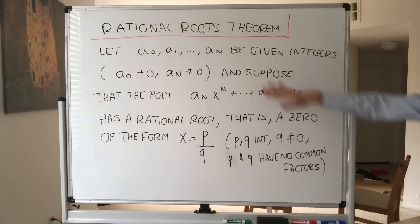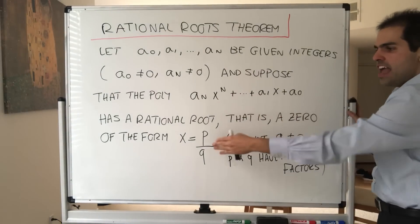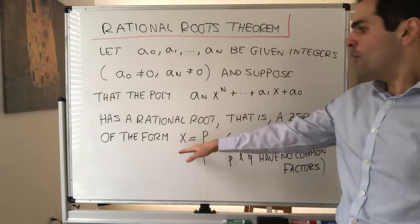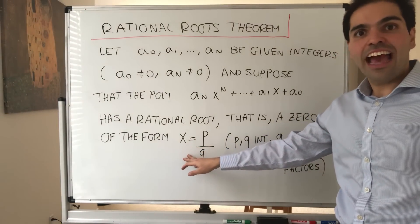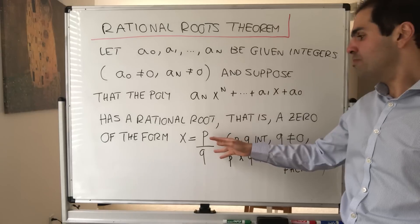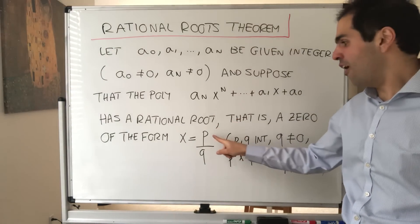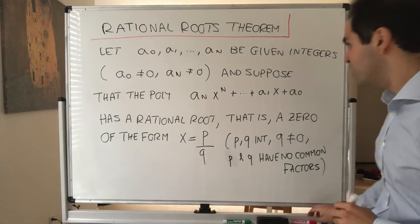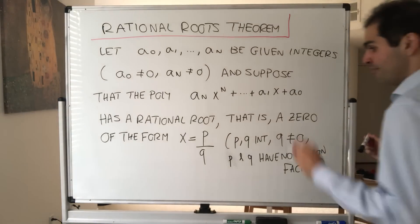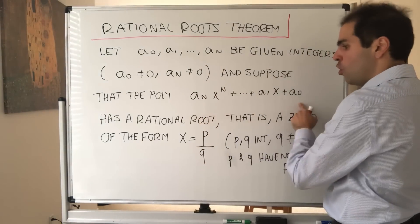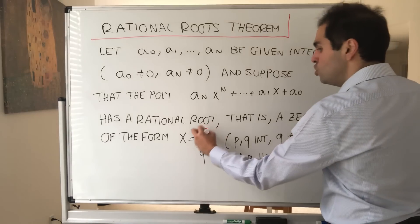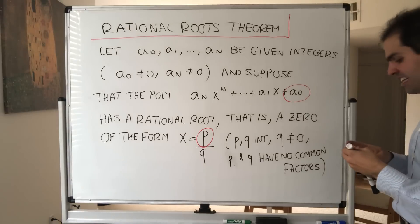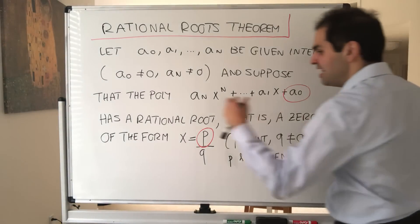So again, so far just the setup. Suppose you have a polynomial and you know it has a root that's a fraction. Now comes the interesting thing. What this theorem says is x cannot just be a random root. There needs to be some very specific conditions on p and q, which gives you a lot of restrictions on what your root can be.